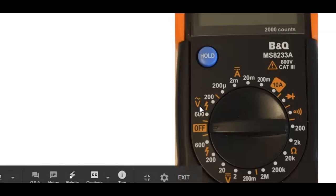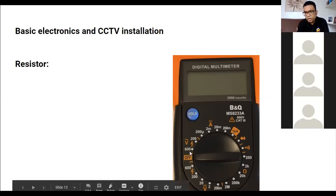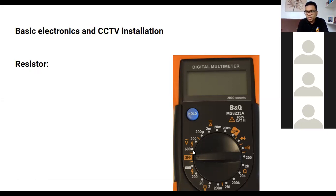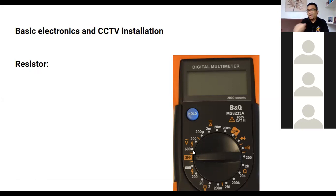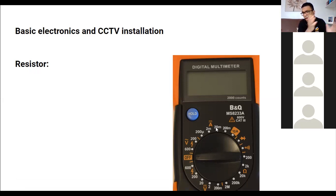The wavy line on the 'V' indicates alternating current, meaning the voltage fluctuates. In the UK we use 230V, so you must set the meter to 600 to read it — you can't use the 200V setting for 230V. In the US with 110V, the 200V setting would work. The amperage setting measures current flow, and straight lines indicate direct current.